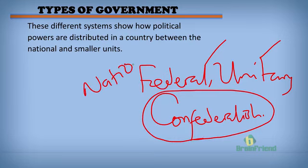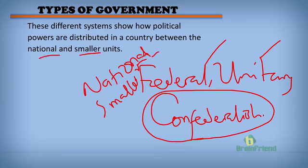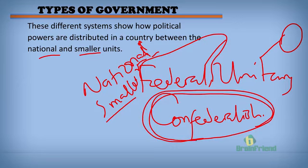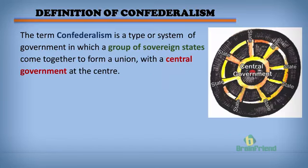In these systems, we have the distribution of power between the national and smaller units or states. In countries practicing the federal system, powers given to the central government are more than those given to smaller units. In the unitary system, it's a more uniform kind of power. But in confederalism, the national or central government has powers given at a very small proportion compared to the powers given to the different units or states. This will lead us to our definition of confederalism.